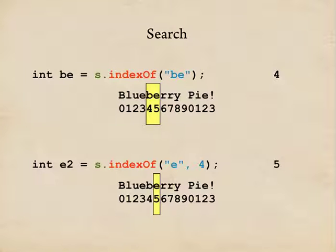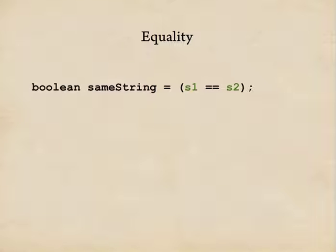So great! Now we can find the location of characters in a string, pull out individual characters, and pull out substrings. There's really one more big thing to cover, and that's testing for equality. Suppose someone types in their first name and you want to test to see if it's something special. You might try to compare the strings with something like this — creating a boolean variable called sameString, and its value is the result of s1 == s2. This is a perfectly reasonable thing to type, and unfortunately, it's wrong. For technical reasons, this is not the right way to test for strings. It will work sometimes, but it will also fail sometimes. If you get in the habit of testing with the double equals, you're asking for trouble.